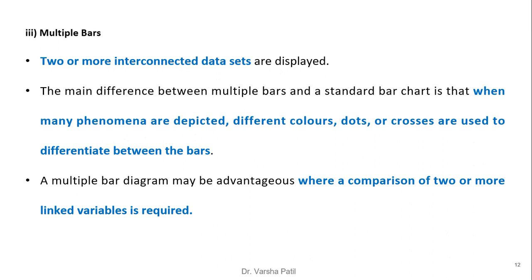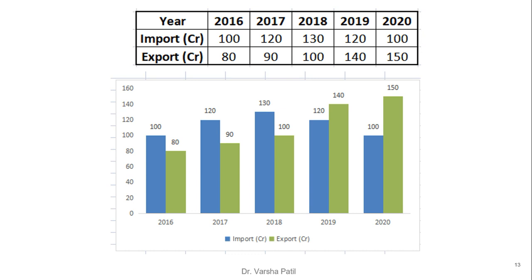A multiple bar diagram displays two or more interconnected data sets. The main difference from a standard bar chart is that when many phenomena are depicted, different colors, dots, or crosses are used to differentiate the bars. A multiple bar diagram is advantageous when comparison of two or more linked variables is required. For example, five years — 2016, 17, 18, 19, 20 — are given and we compare import and export values in crores for each year, since import and export are linked variables.